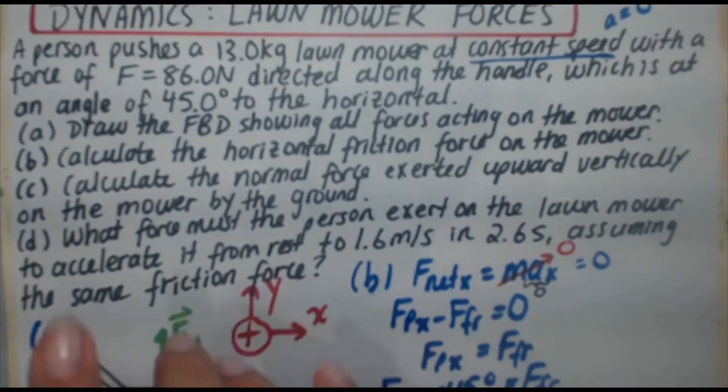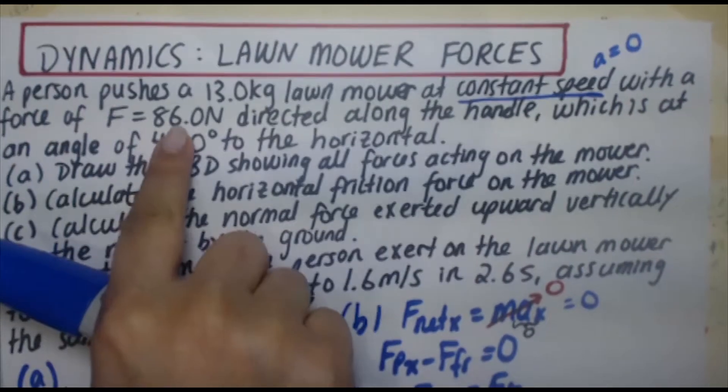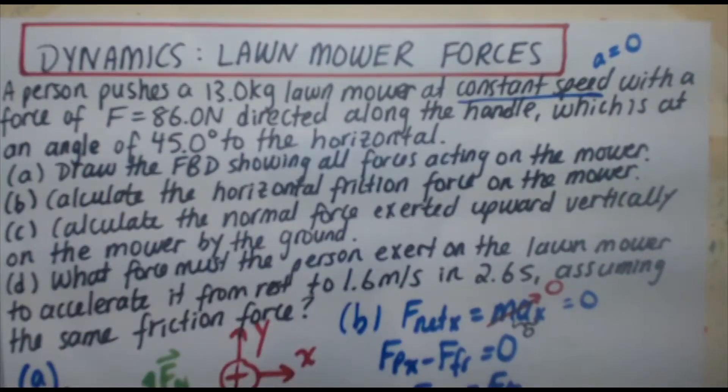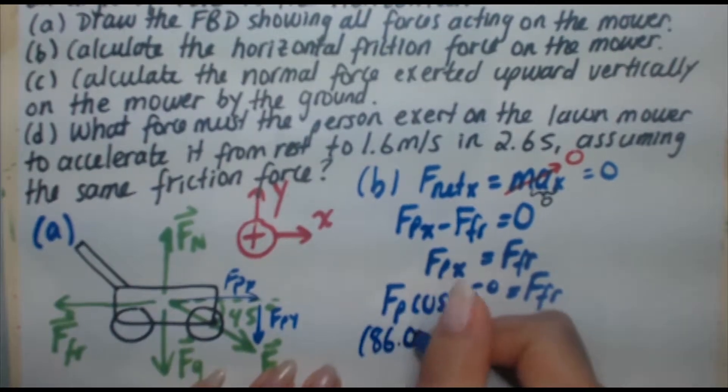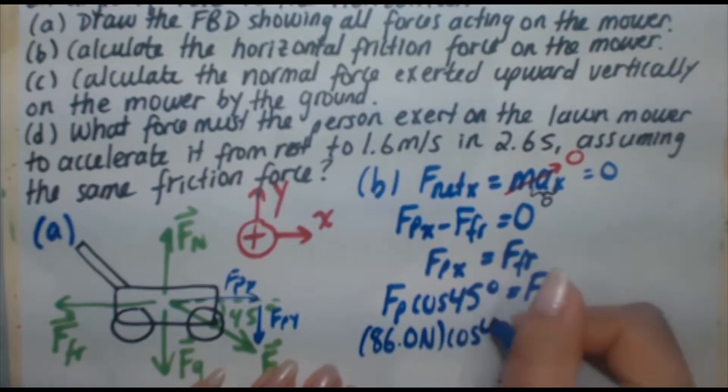And in the question, we're told that the person pushes with a force of 86.0 Newtons. So that's what goes here. 86.0 Newtons times cosine 45 degrees equals force of friction.